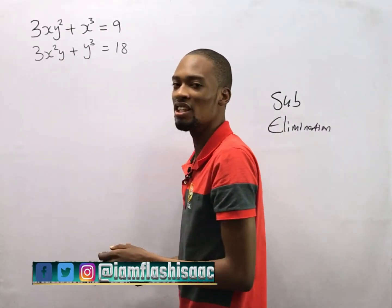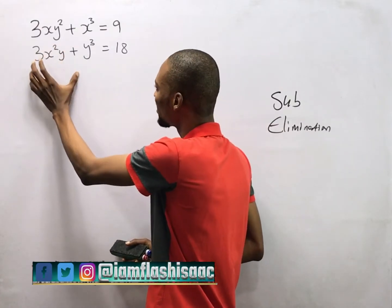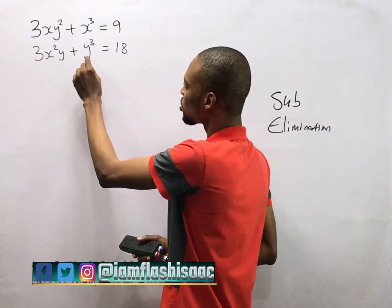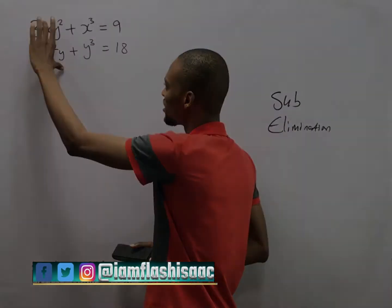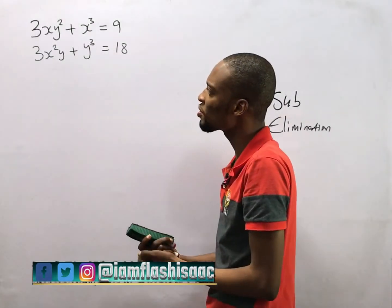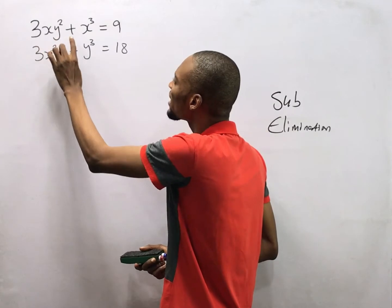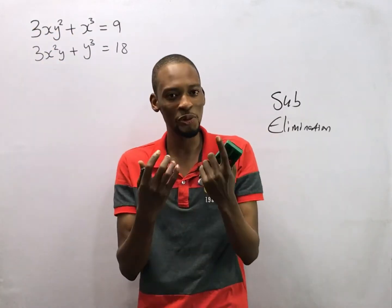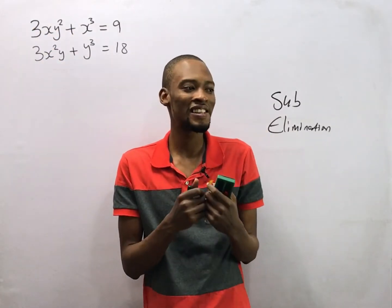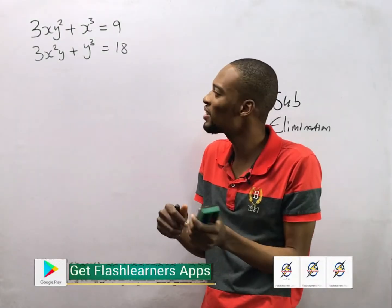In this question, you cannot eliminate because there is no way to multiply to make the terms match, and you can't use the substitution method because it is very hard to make s the subject of the formula here — that would not work. So what do we do?